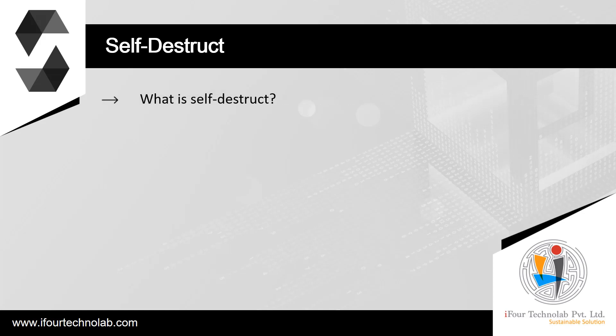What is self-destruct? The only way to remove code from the blockchain is when a contract at that address performs the self-destruct operation. The remaining Ether stored at that address is sent to a designated target, and then the storage and code are removed from the state. Removing the contract in theory sounds like a good idea, but it is potentially dangerous — if someone sends Ether to a removed contract, the Ether is forever lost. Warning: even if a contract is removed by self-destruct, it is still part of the history of the blockchain and probably retained by most Ethereum nodes. So using self-destruct is not the same as deleting data from a hard disk.